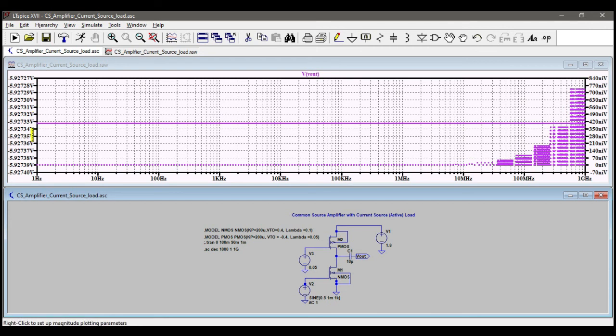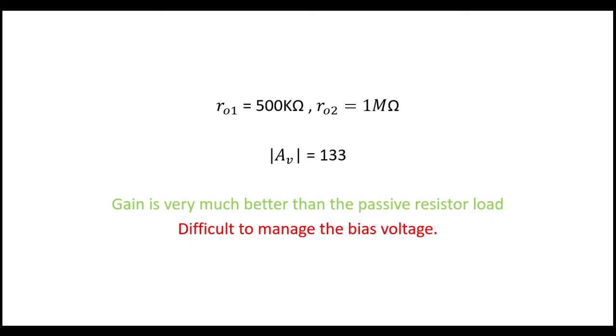So this is the problem with the common source amplifier with the current source load. Even though it gives a large gain, keeping this Vbias is a very difficult task. So how to solve this problem with the common source amplifier with the current source load of difficult to manage the bias voltage? There are other topologies of amplifiers which give higher gain and also without this difficulty. We'll discuss them in the next video. That's it, thank you.